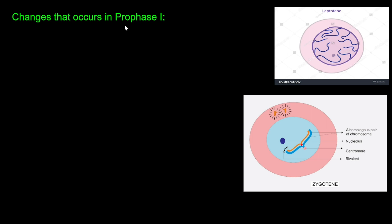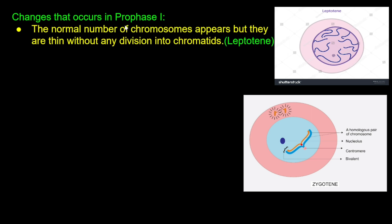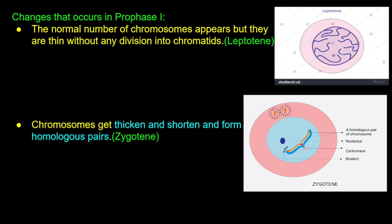Now the changes that occur in prophase first. First is Leptotene: the normal number of chromosomes appear but they are thin, without any division into chromatids. The chromosomes are just thread-like. This is called Leptotene.